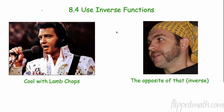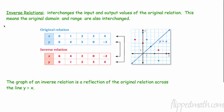An inverse function — 'inverse' is another way to say 'the opposite.' For example, Elvis made lamb chops look cool; the opposite of that would be Mr. Kelly. An inverse relation interchanges the input and output values of the original relation: we take our X's and make them our Y's, and take our Y's and make them our X's. This means the original domain and range are also interchanged.